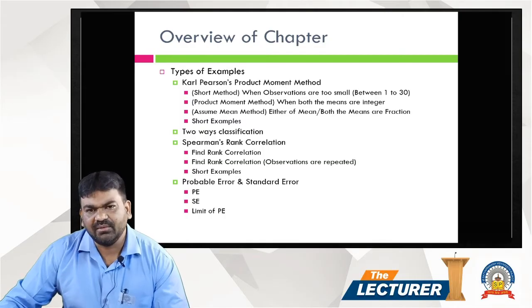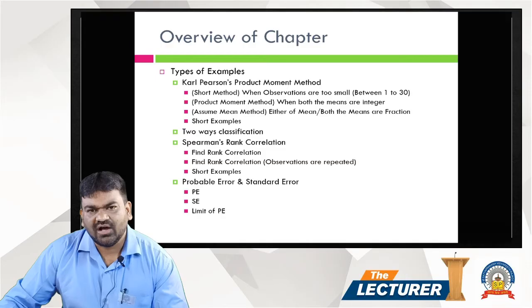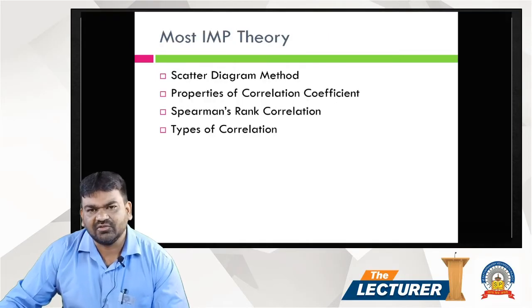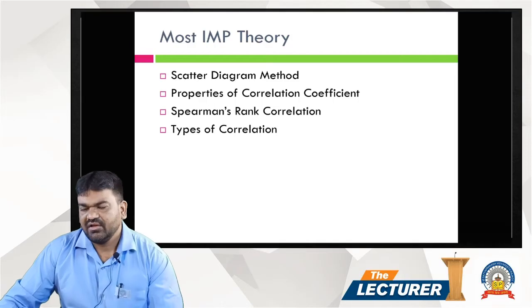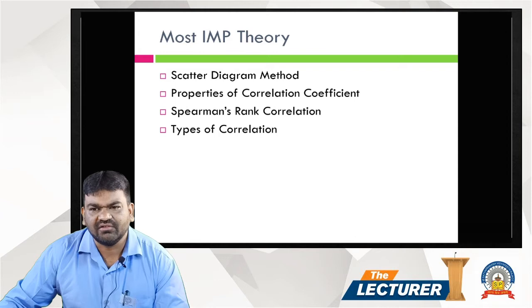Type 4 is Probable Error (PE) and Standard Error (SE). Last is the Limit of Probable Error. This is our chapter overview. We will find our practical sums in this chapter.